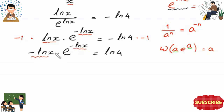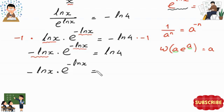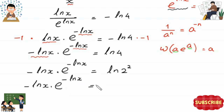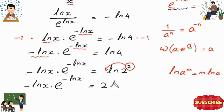Now we have the same expression negative ln of x on both sides of the left. To apply the Lambert W function on the right side too, we write ln of 4 as ln of 2 squared. By the log power rule, this becomes 2 times ln of 2.